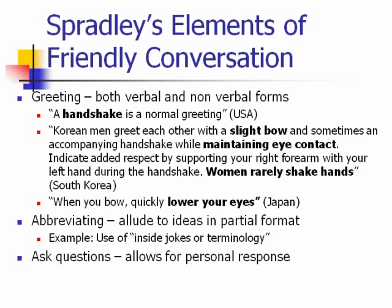It's not just about different racial groups — this could be based upon a person's disability status. What happens when you're interacting with a client who maybe isn't physically able to shake their hand? What is their pattern of interaction and what sorts of greetings are they offering to you? Another important part of friendly conversation includes abbreviating — alluding to ideas in only partial format. This can include things such as telling jokes or finishing other people's sentences.